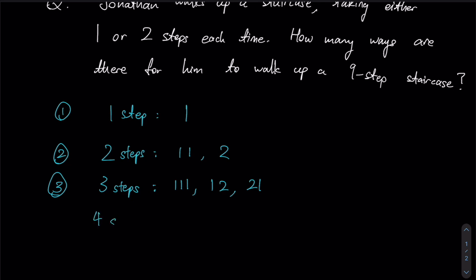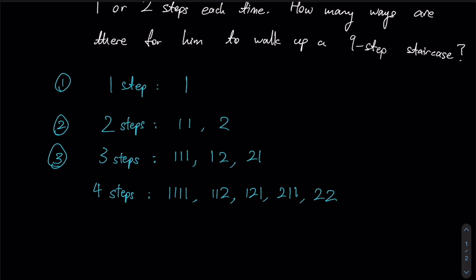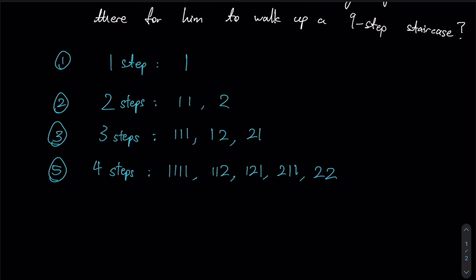What about if we consider four steps? We would still have the option to simply use one steps all the way. We could have one, one, two, one, two, one, two, one, one, and even two and two. And as you can see, that constitutes five total ways.